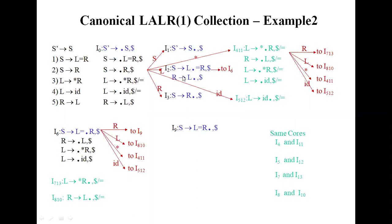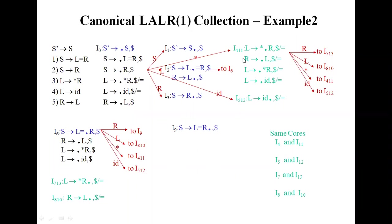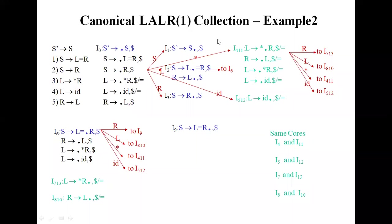See the canonical LALR example. Consider a grammar S' equal to this. I0 is dot S and we compute the set of items. Then I0, I1, I2, I3, I4, I5, I6. States I4 and I11 have the same core part so we combine them into I4,I11. States I5 and I12 have the same core part so we combine into I5,I12. By combining in this way we can get the LALR parsing.